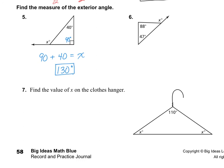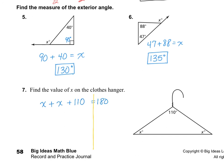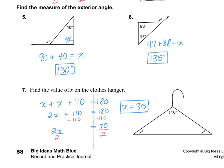Number 6 is very similar to number 5, so pause the video and try number 6 on your own. The answer I got for number 6 is 135 degrees. If you did not get it correct, see if you can find your mistake. For number 7, find the value of x for the clothes hanger. This angle up here is 110, and these are each x. Remember, the interior angles in a triangle always add to 180. So x plus x plus 110 equals 180. Pause the video and finish number 7 on your own. I got x equals 35. Thanks for watching.